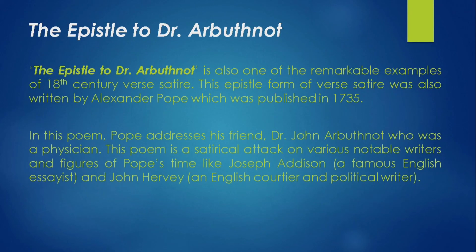This poem is a satirical attack on various notable writers and figures of Pope's time, like Joseph Addison and John Hervey. In the Augustan period, Pope launches his satirical attack on the famous writers of his time — particularly Joseph Addison, who was a famous English essayist, and John Hervey, who was an English courtier and political writer. Alexander Pope makes a satirical attack on both of them.